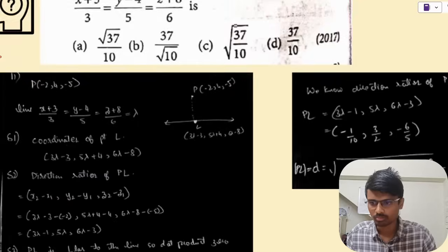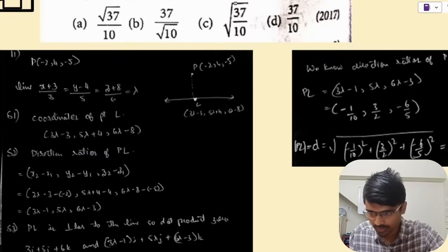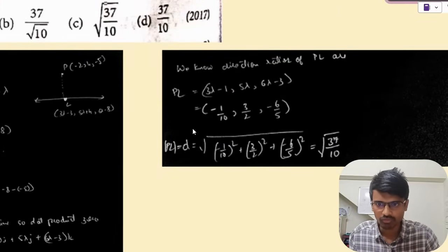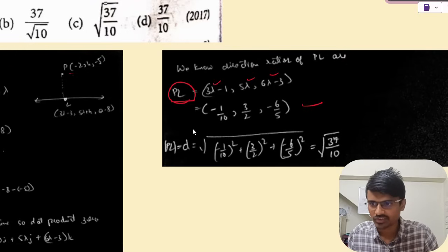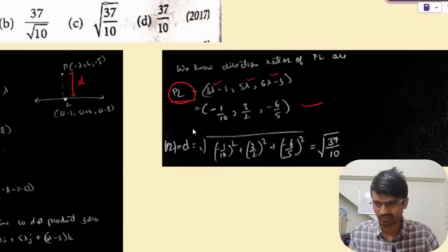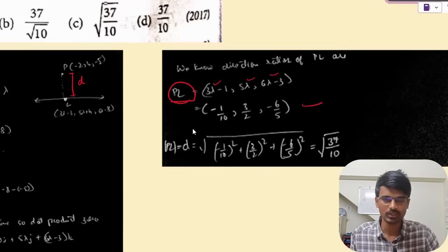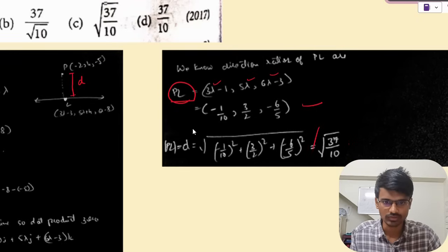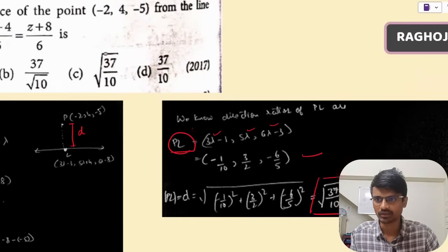Coming to the second part: now we substitute the value of λ to find the direction ratios of PL. Then the distance D is found using the magnitude formula: D = √[(−1/10)² + (3/2)² + (−6/4)²]. Applying the distance formula — taking the square root of the sum of squares of each component — the answer on simplifying is √(37/10). So the correct answer is option C.